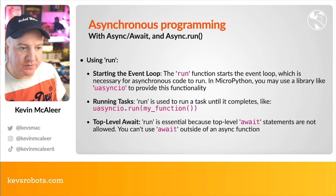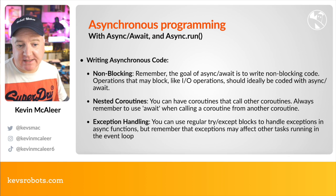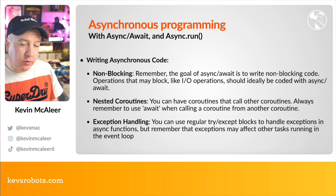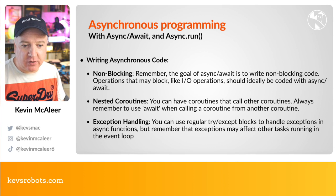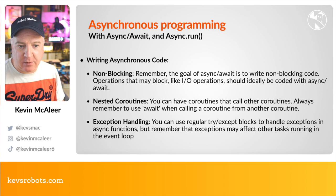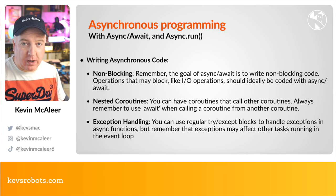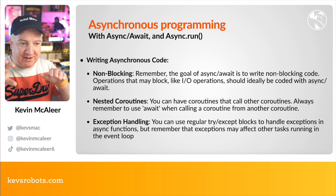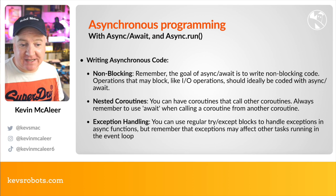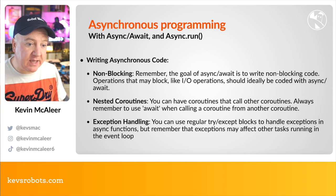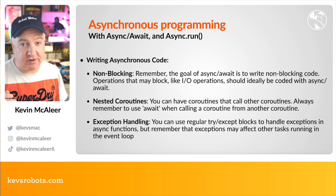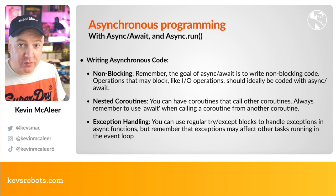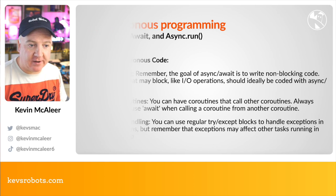The goal of async/await is to write non-blocking code. Blocking code — say something that takes five minutes to process — would block any other code from running. Non-blocking means that operations like I/O are ideally coded with async and await. For nested coroutines, always remember to use the await keyword when calling a coroutine from another coroutine. You can use regular try/except blocks to handle exceptions within async functions, remembering that exceptions may affect other tasks in the event loop.